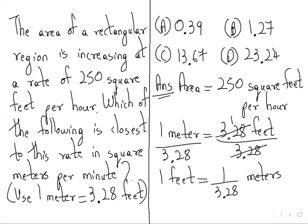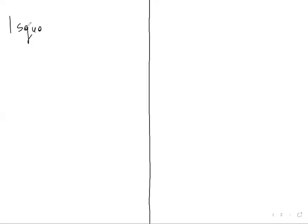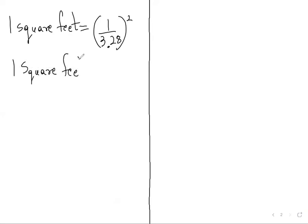Now, this is given in square feet, so 1 square foot equals 1 over 3.28 squared, which is 1 over 10.7584 square meters, where 3.28 times 3.28 equals 10.7584.